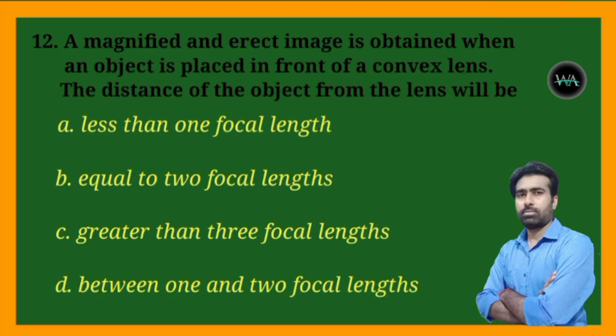Next question: a magnified and erect image is obtained when an object is placed in front of a convex lens. The distance of the object from the lens will be — less than 1 focal length, equal to 2 focal lengths, greater than 3 focal lengths, or between 1 and 2 focal lengths?